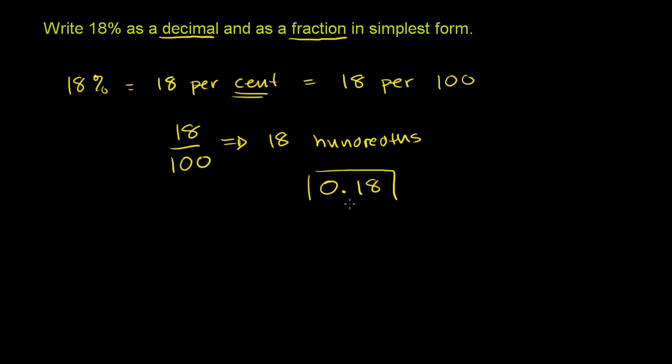So this is written in decimal form. And if we write it as a simplified fraction, we need to see if there is a common factor for 18 and 100. And they're both even numbers, so we know they're both divisible by 2. So let's divide both the numerator and the denominator by 2. So we have 18 divided by 2 over 100 divided by 2. And we're going to get 18 divided by 2 is 9, 100 divided by 2 is 50. And I don't think these guys share any common factors. 50 is not divisible by 3. 9 is only divisible by 3 and 1 and 9. So this is the fraction in simplest form.